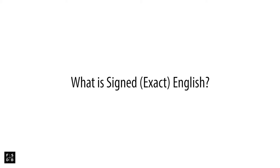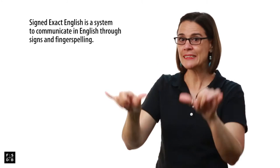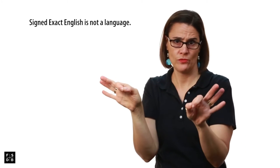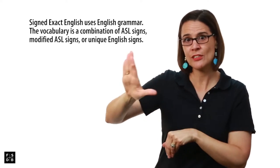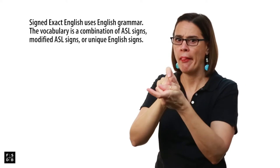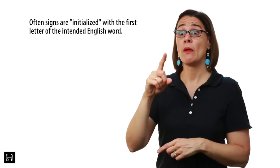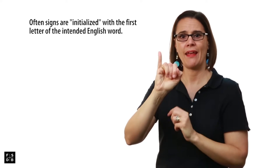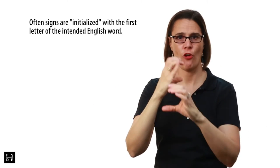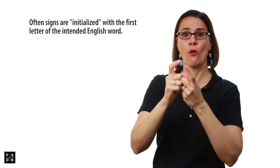What is Signed Exact English? Signed Exact English is a system to communicate English words and expression through sign language. Signed Exact English is not a language. It uses English grammar. Its vocabulary and terminology and ASL signs are borrowed for Signed English and sometimes they are changed. When you're using Signed Exact English and borrowing those ASL signs, you often will initialize them. For example, the sign for car, this is the ASL sign for car. In Signed English you would sign it like this. The sign for bus could be made like this in ASL. In Signed English it would look like this.